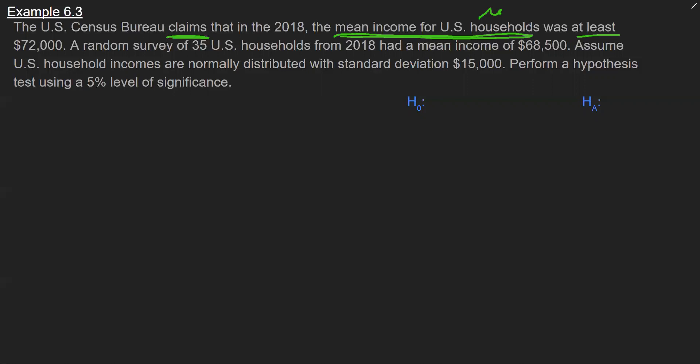So what I like to do here is for the parts I underline, I like to just write it out mathematically by translating these words into algebra. So when I write it all out I have here the mean income, that's mu, is at least, that's greater than or equal to, and then $72,000.